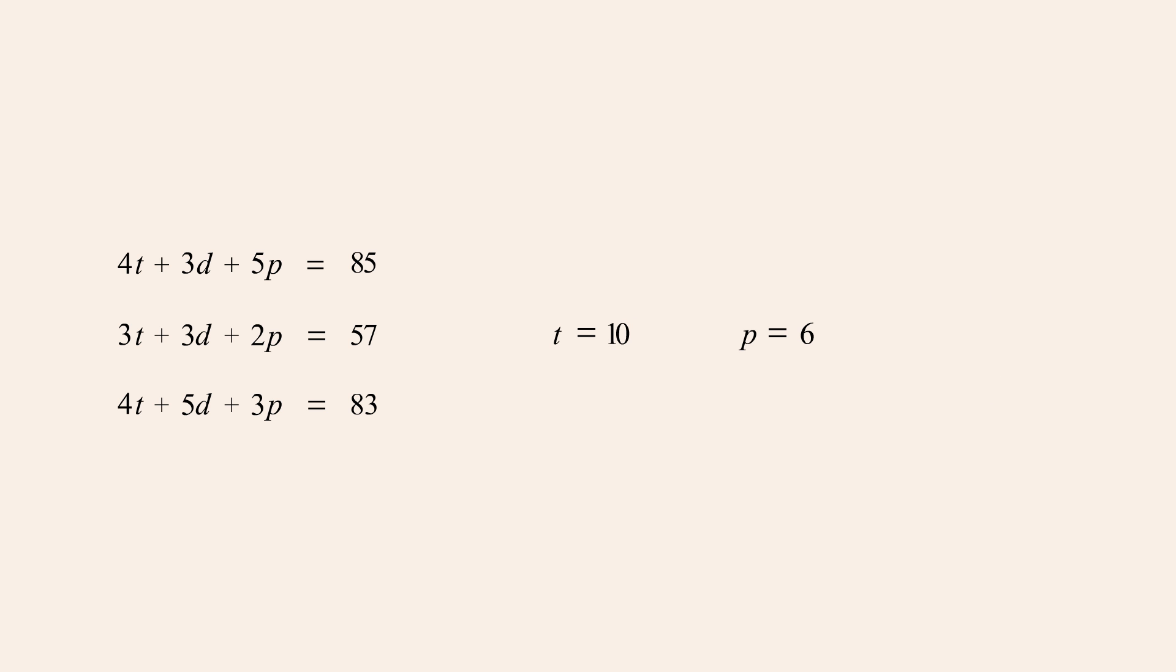We can now substitute these values for t and p into any of the original equations and solve for the remaining variable, d. Choosing the first equation, we complete the arithmetic and combine like terms: 3d plus 70 equals 85. Subtracting 70 from both sides gives us 3d equals 15, or dividing both sides by 3, d equals 5.